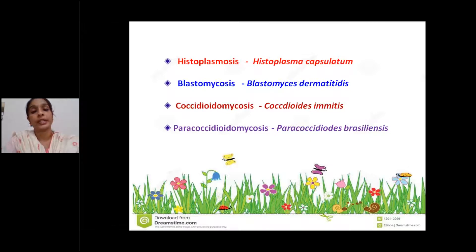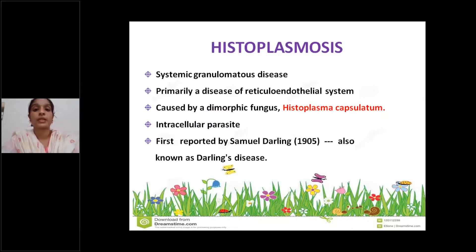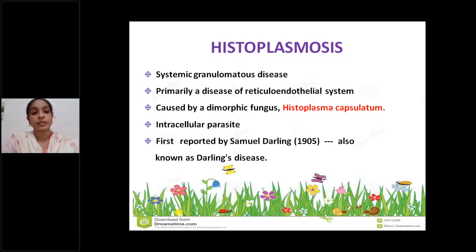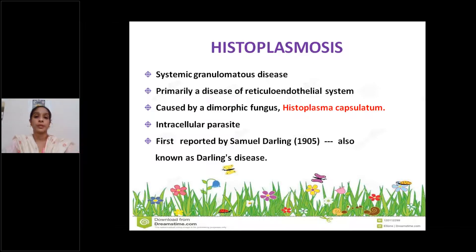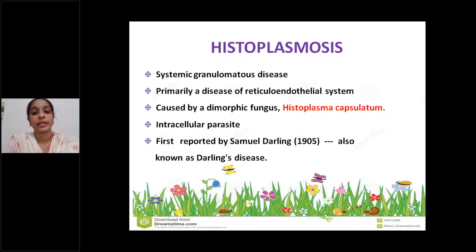Among all these, the most important and most common one is histoplasmosis — very, very important for your exams. Histoplasma capsulatum causes a systemic granulomatous disease and is primarily a disease of the reticuloendothelial system. It is caused by the dimorphic fungus Histoplasma capsulatum, which is an intracellular parasite. Histoplasmosis is also known as Darling's disease, because it was first reported by Samuel Darling in 1905.